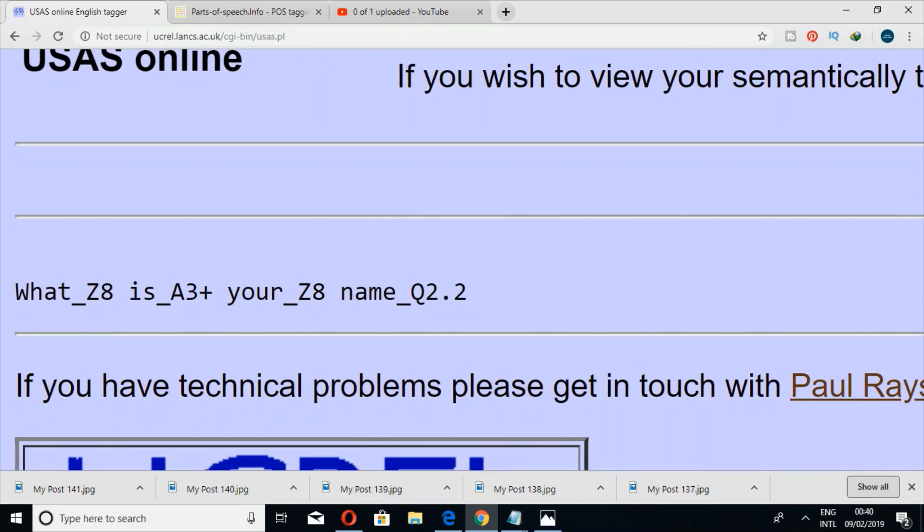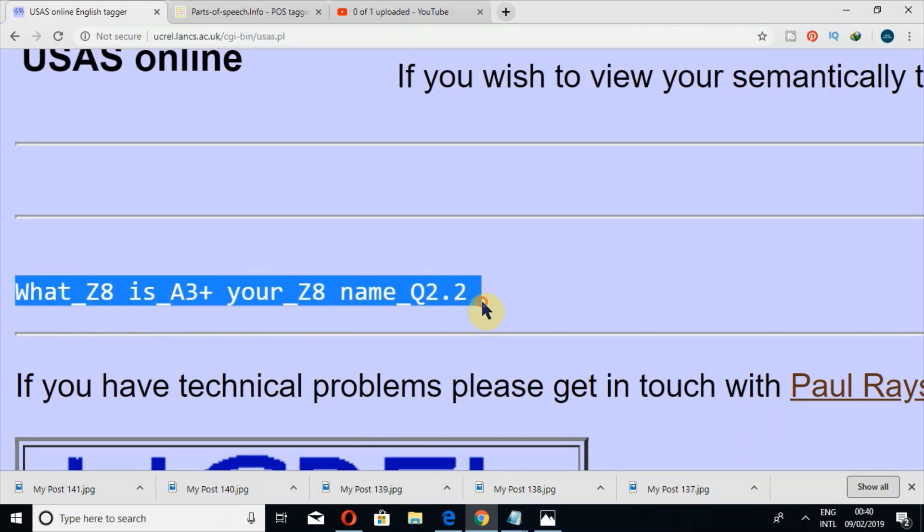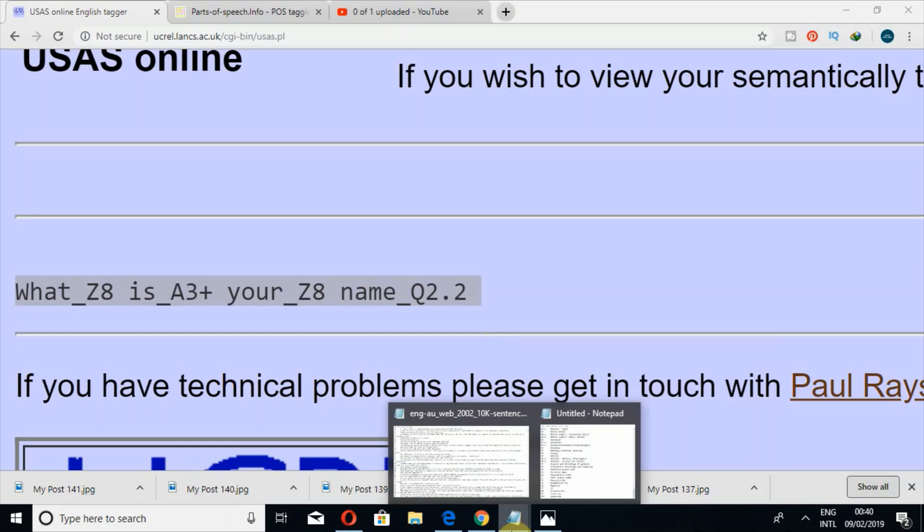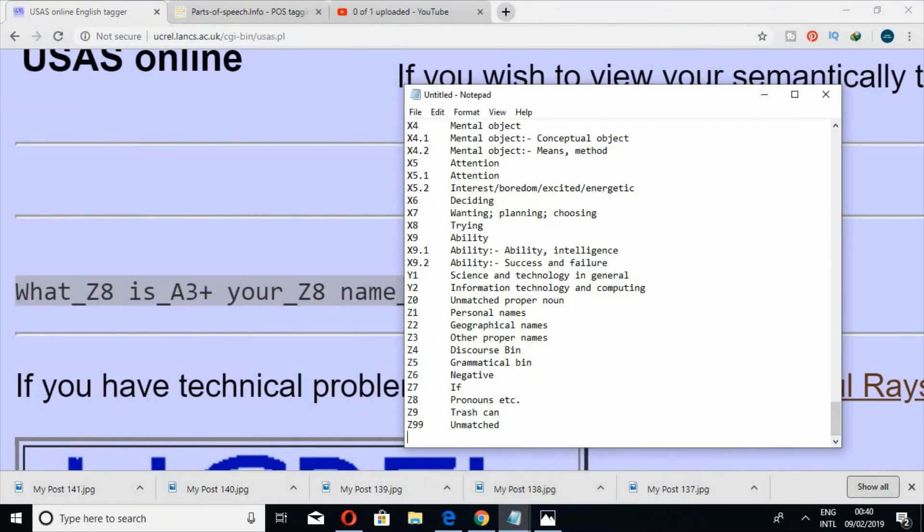In this way, your data will be tagged. 'What' is given Z8, 'is' is given A3+. You can see in the introduction guide what are these tags. Then you simply just copy it by Ctrl+C or right click and then copy and paste it in your file.